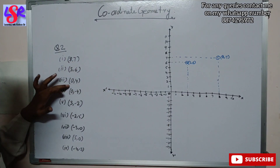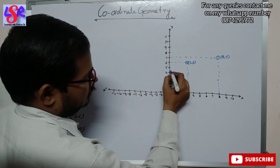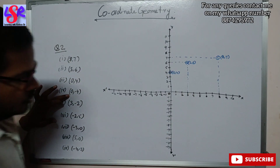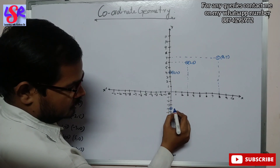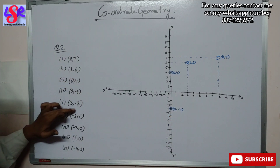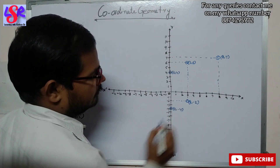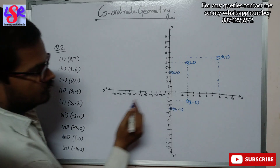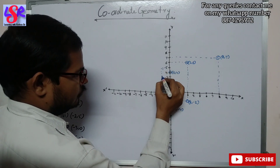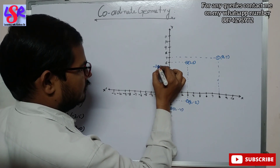Then we have 0 comma 4. In the case of 0 comma 4, x is 0 and y is 4, so we have this coordinate as 0 comma 4. Then we have 0 comma minus 4, which will be plotted below the origin, and this is 0 comma minus 4. Then we are having 3 comma minus 2 — positive 3 but minus y — so we have the point 3 comma minus 2. Then we have minus 2 comma 5, meaning x is minus 2 and y is 5, so the point is plotted here as minus 2 comma 5.